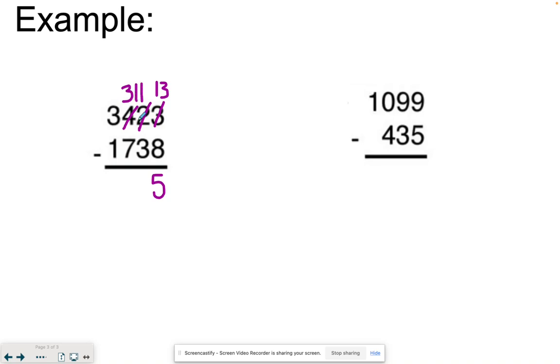That number will become one smaller, making the number next to it ten bigger. So we have eleven minus three now, which gets us eight. Now we move to the hundreds digit. We have a three minus a seven. Three is smaller than seven, so we need to borrow from next door. And what we're borrowing is ten more. Thirteen minus seven, we can do, we get six. And two minus one we can do. Don't forget to add a comma into your answer. It's always ones, tens, hundreds, comma, for the thousands place value.